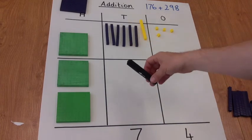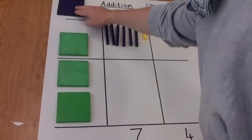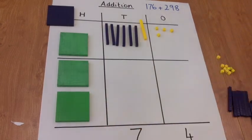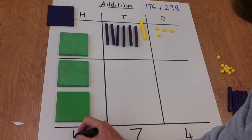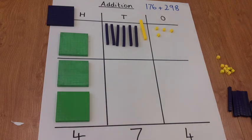And then when we come to count up the hundreds, we've got 1, 2, 3, 4. Nice and simple, no regrouping required. So we just write 4 in the hundreds column.